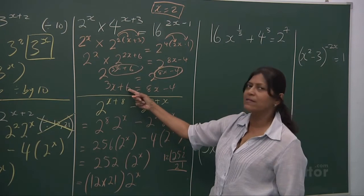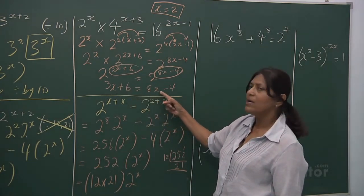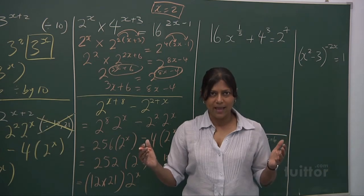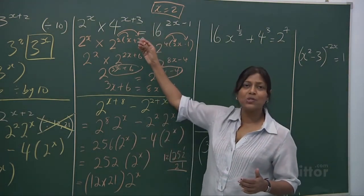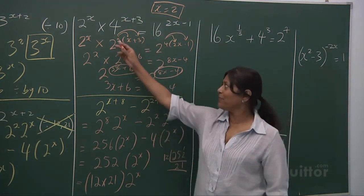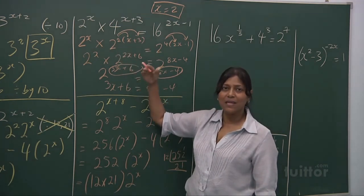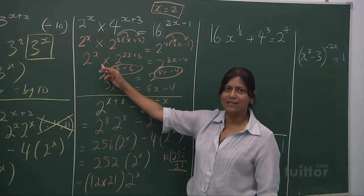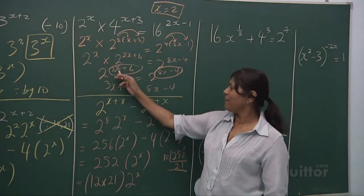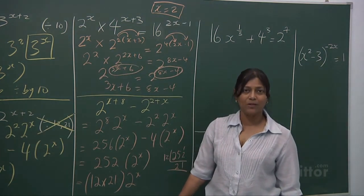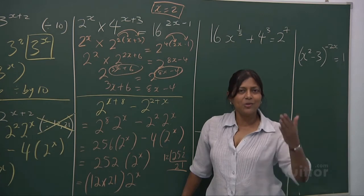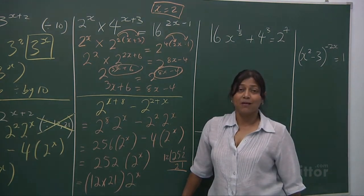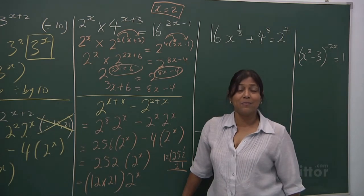Bring your 3x over and you've got 5x. Bring your 4 over and you've got 10. So 10 equals 5x, and your x is equal to 2. Let's verify: 3 times 2 is 6, plus 6 is 12. And 8 times 2 is 16, minus 4 is 12. They're both balanced. I broke them to a common number — I broke them to 2s — then expanded, applied the laws of indices, and equated the powers. Do your maths step by step and be cautious — don't be in a hurry, because that's when you make careless mistakes.